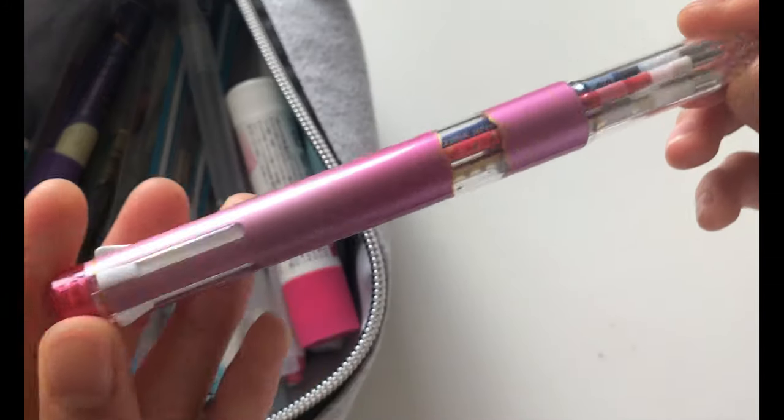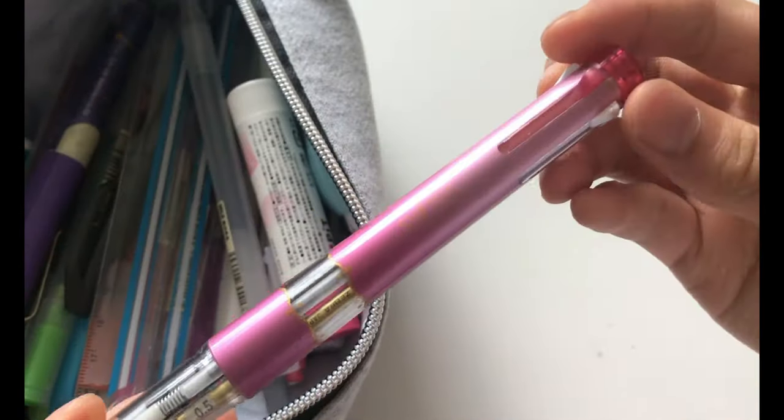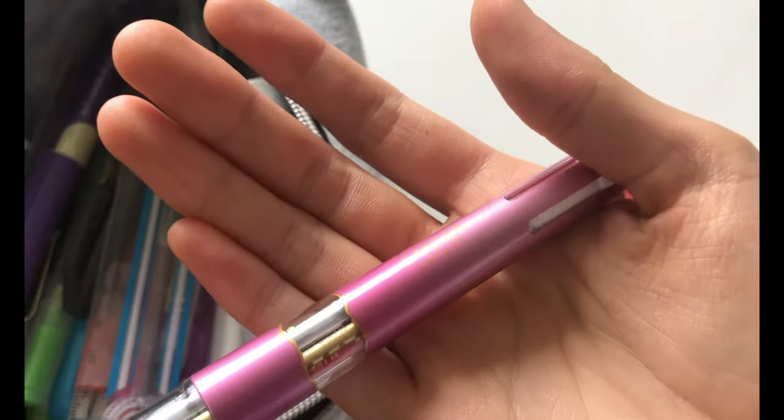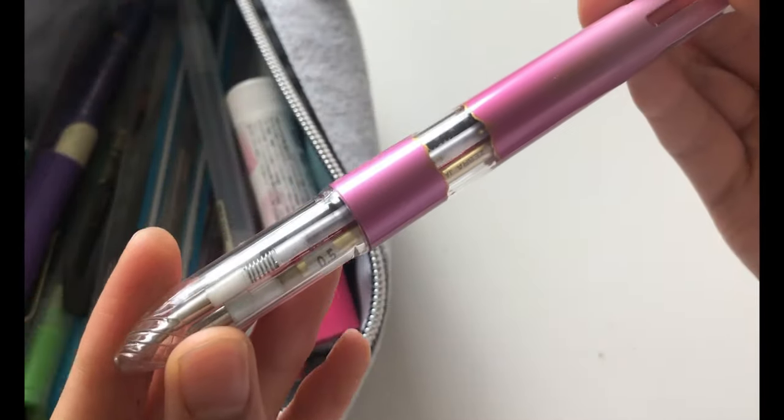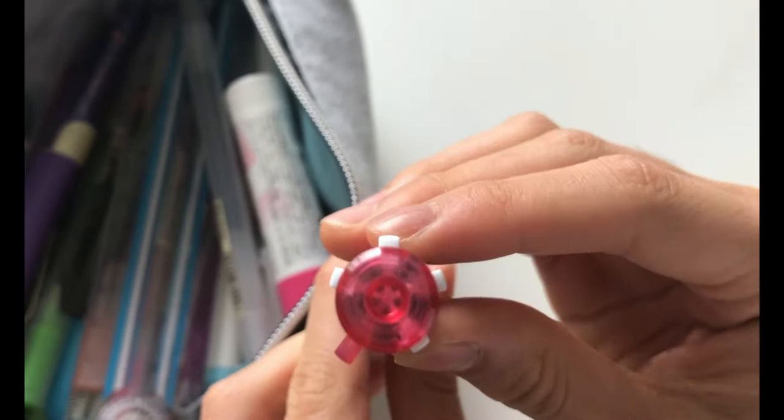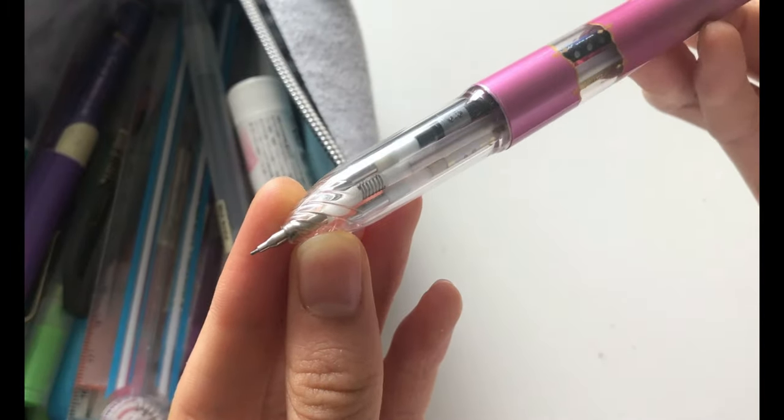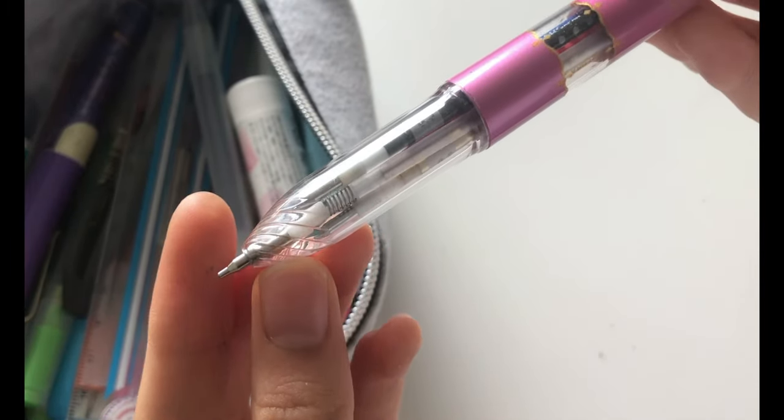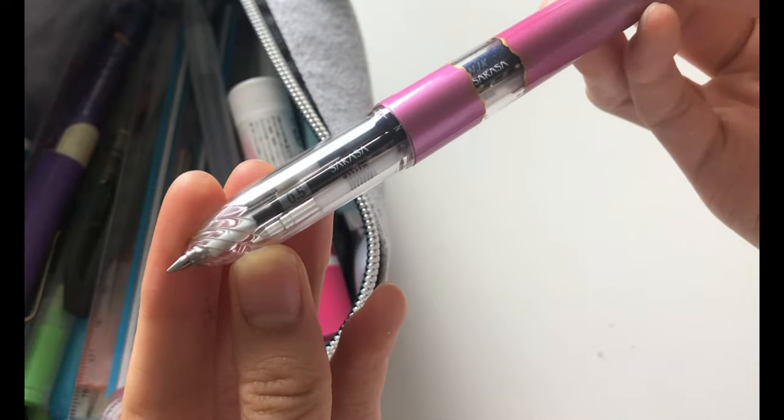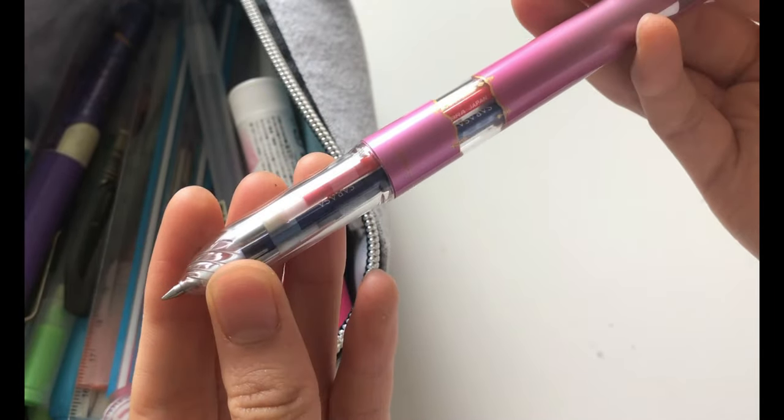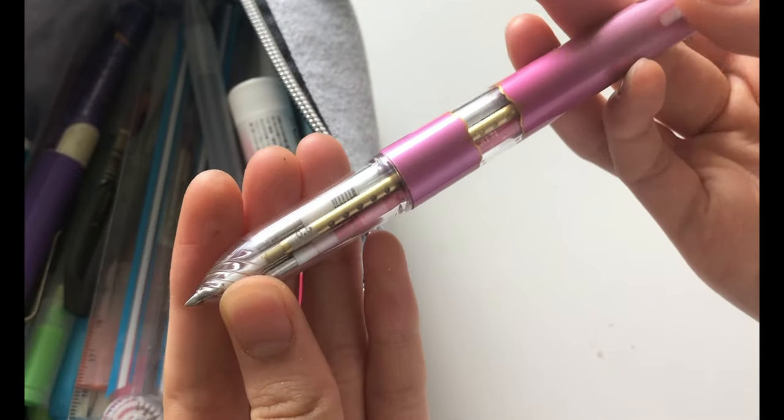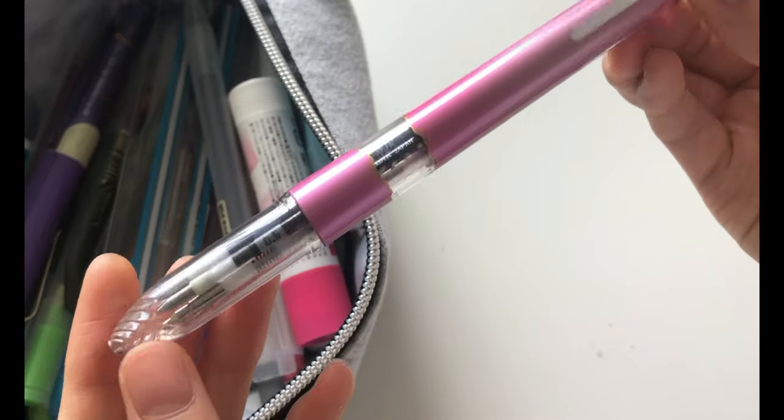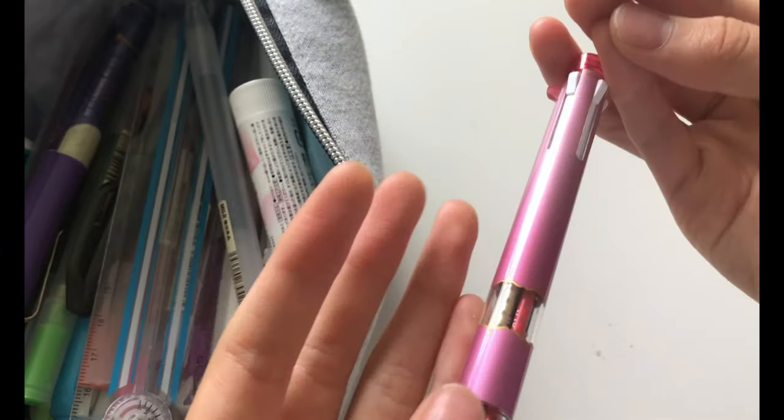The next item is the Sarasar Select. So I use this all the time in maths because you can choose what colours and what things you want in the actual pen. So I chose lead, black, blue, red and gold in this. So I don't use gold for my maths notebooks, but I use it for my bullet journals and this is probably the best thing I've used for maths.